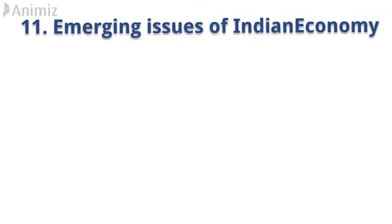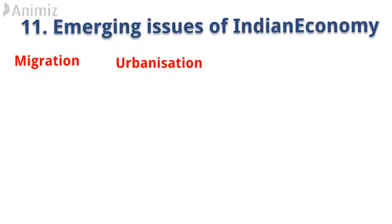Hello friends, today we will learn the 11th chapter of your economics: emerging issues of Indian economy. The chapter has been divided into three broad categories. First is migration, second is urbanization, and the third one is infrastructure facilities.